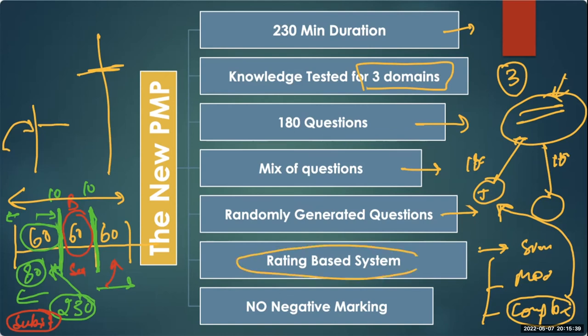This is a rating-based system I told you about. The ratings are: needs improvement, below target, on target, and above target. There is no negative marking.